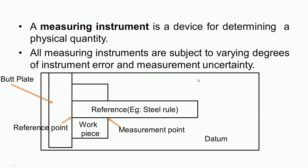We have the datum on which the measurement process takes place, and then we have the work piece whose length is to be measured. We need a reference — for example, a steel rule or measuring tape — which is placed on the work piece and pressed against the butt plate. We start measuring the length from one edge of the work piece, which is the reference point, and look for the coinciding division on the steel rule at the other edge, which becomes the measurement point. The difference between the reference point and the measurement point is the length of the work piece.